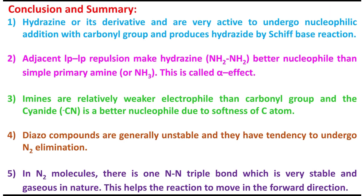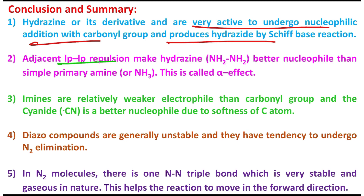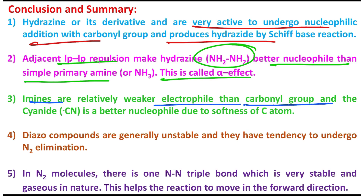In conclusion, what you have learned today: hydrazine and its derivatives are very active to undergo nucleophilic addition with carbonyl groups and they produce hydrazones by Schiff base reaction. In this context, adjacent lone pair–lone pair repulsion makes the hydrazine a better nucleophile than a simple primary amine or ammonia — this is called the alpha effect. Also remember: after this Schiff base formation, the product is a relatively weaker electrophile than the parent carbonyl group, and that's why a good nucleophile is needed. Cyanide is a better nucleophile because of the softness of the carbon atom.